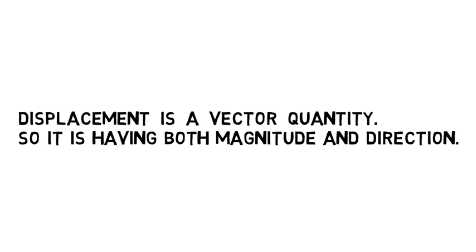One important thing: displacement is a vector quantity, so direction is very important. Distance, on the other hand, is a scalar quantity — no direction is needed. Displacement has both magnitude and direction. Magnitude means the value; for example, if something weighs 24 kg, then 24 is the magnitude.